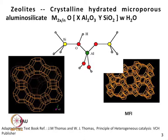This is a faujasite-type structure and this is MFI, which is ZSM-5. Depending on the aluminum-silica arrangement, you will have different kinds of framework structures — how these metal structures are connected determines the framework. The crystalline hydrated microporous aluminosilicate structure has a structure formed from the primary and secondary building units.